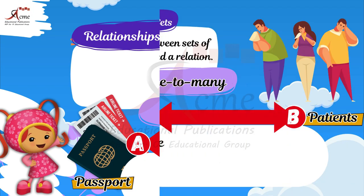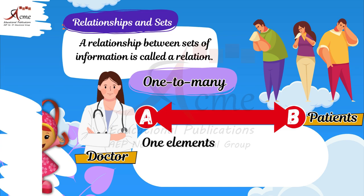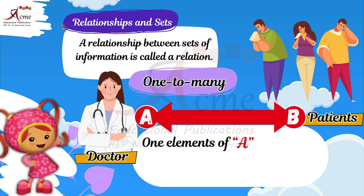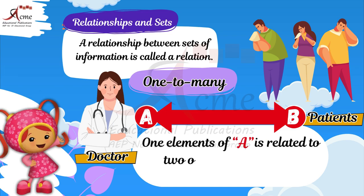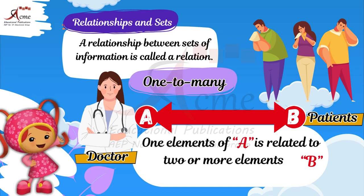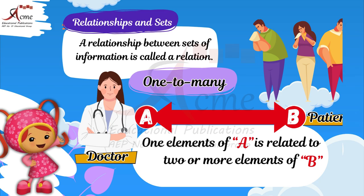Now let's learn about a one-to-many relationship. Look at the picture of a doctor and patients. One doctor can help many patients. This is called a one-to-many relationship.